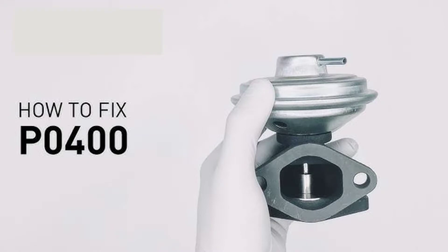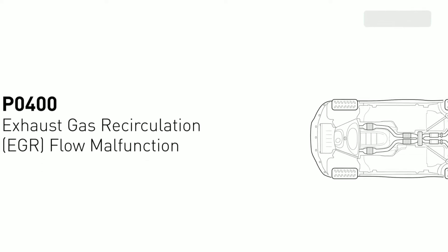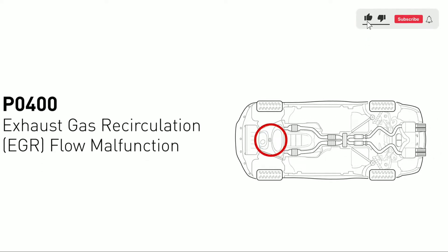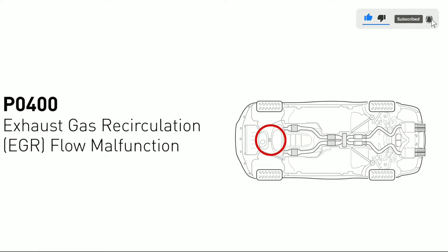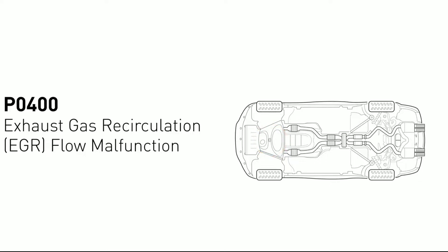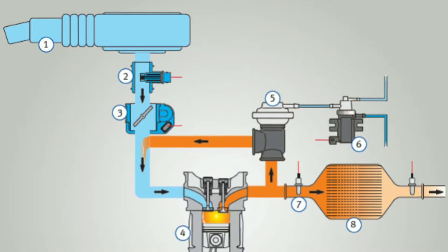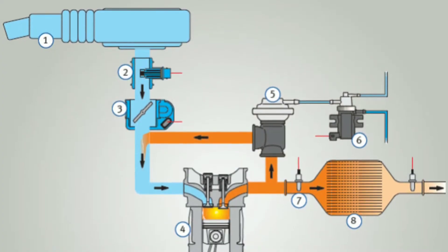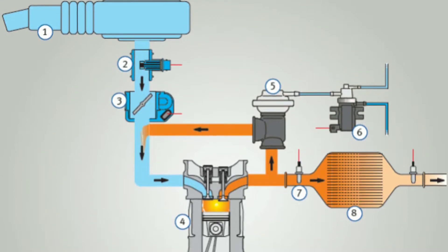First things first, let's clarify what the P0400 code actually means. P0400 is a generic OBD2 code which stands for exhaust gas recirculation flow malfunction. In simple terms, it indicates that there's an issue with the exhaust gas recirculation (EGR) system in your vehicle. The EGR system is crucial for reducing emissions and improving fuel efficiency.